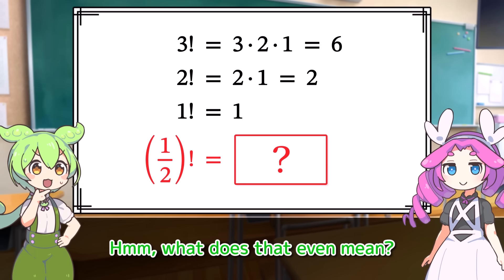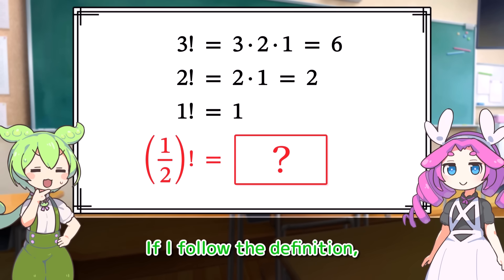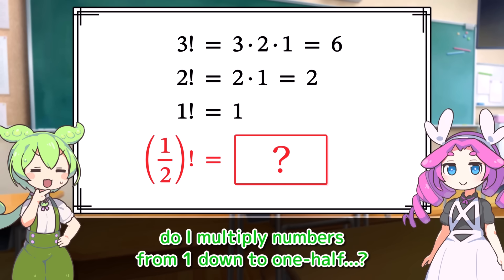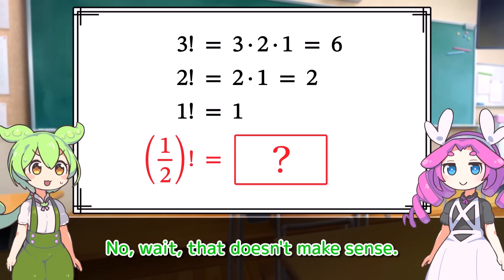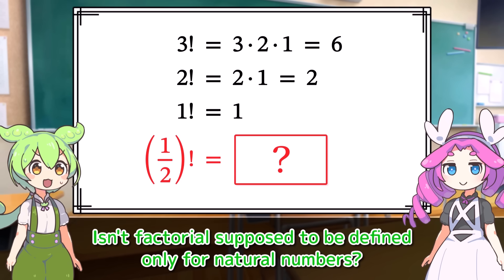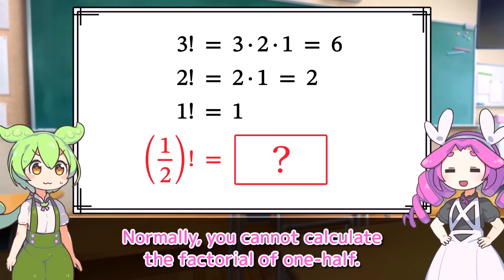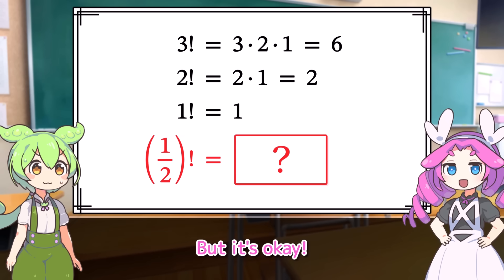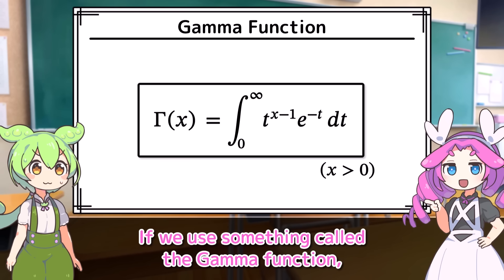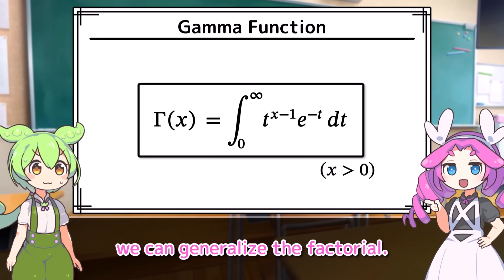What does that even mean? If I follow the definition, do I multiply numbers from 1 down to 1 half? No, wait, that doesn't make sense. Isn't factorial supposed to be defined only for natural numbers? Well, that's understandable. Normally, you cannot calculate the factorial of 1 half, but it's okay. If we use something called the gamma function, we can generalize the factorial.